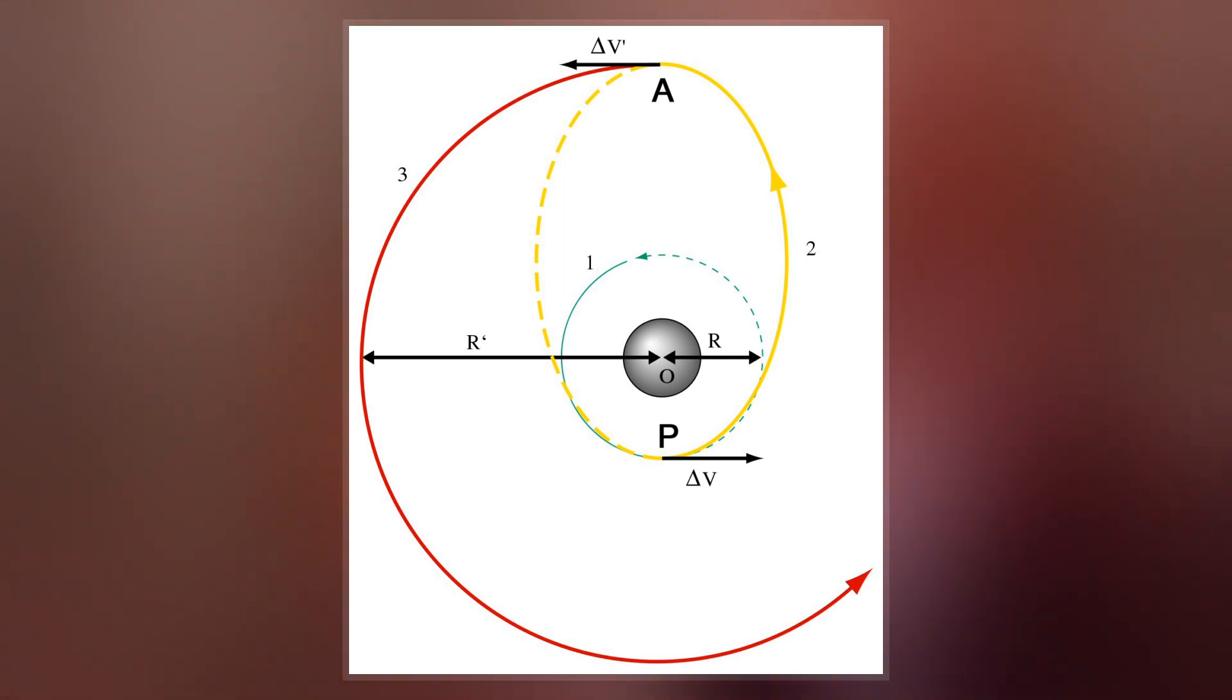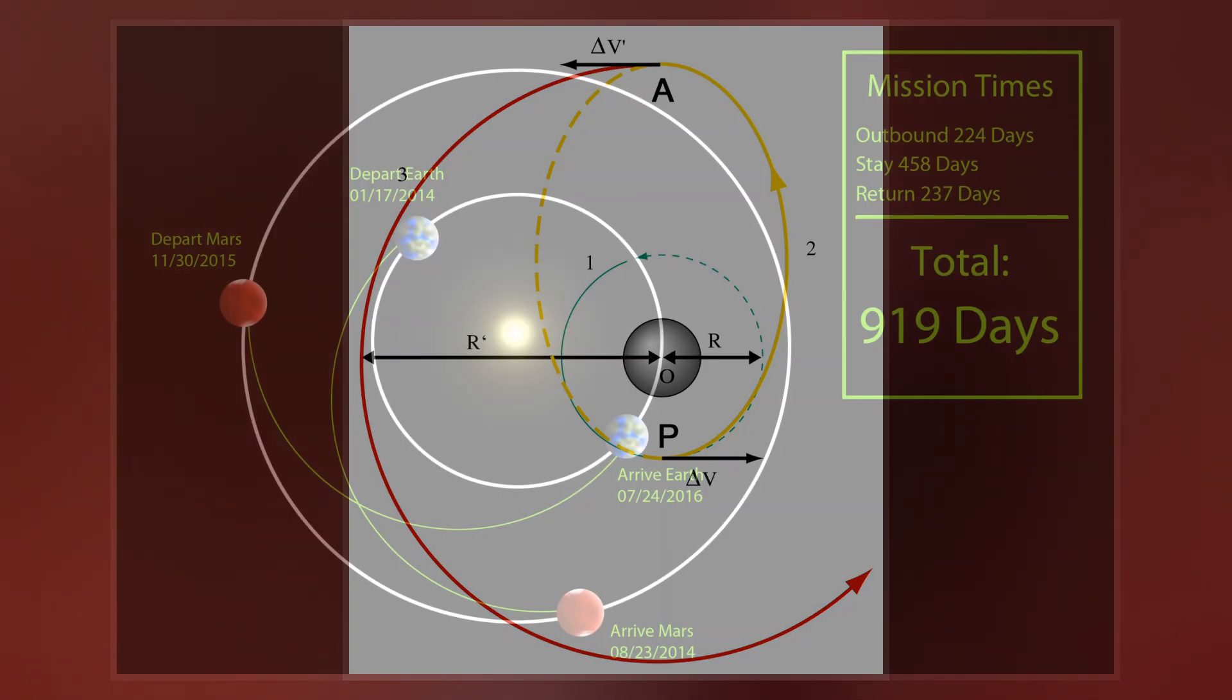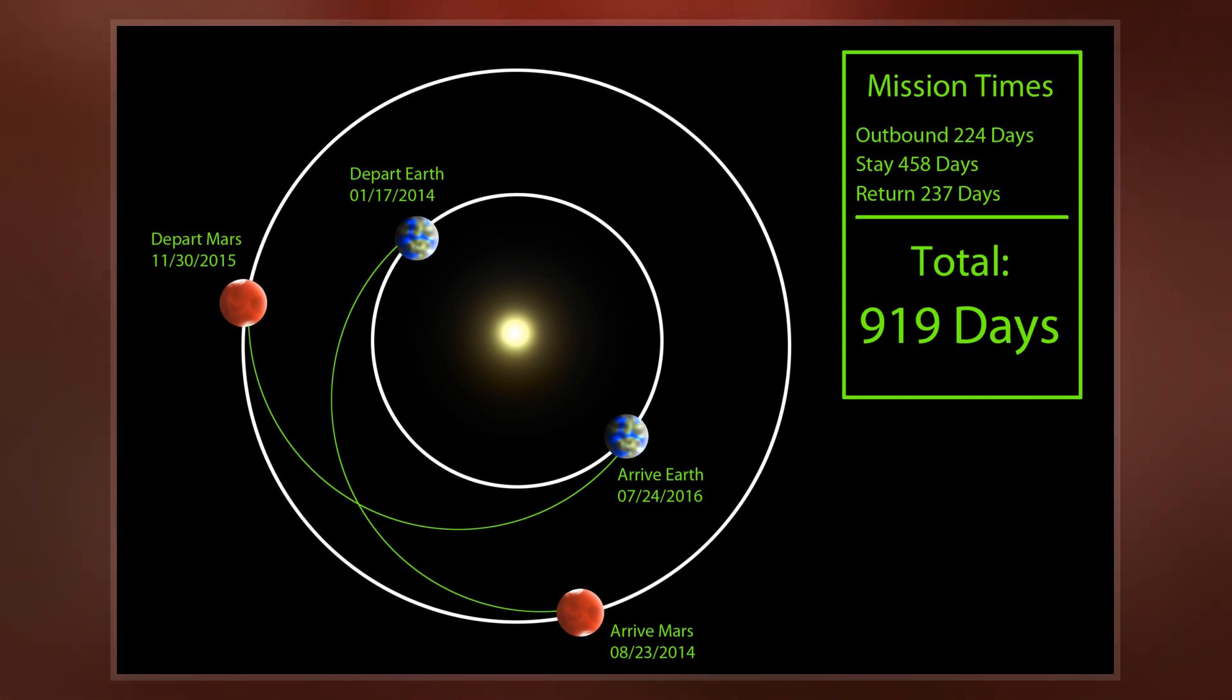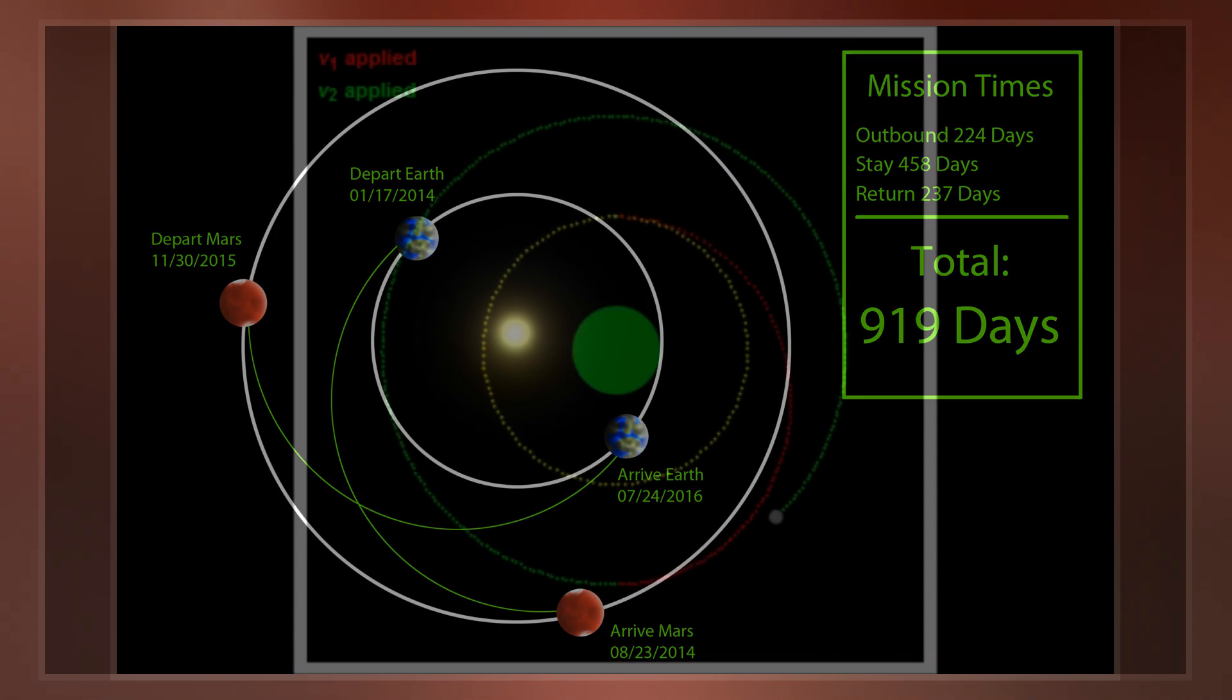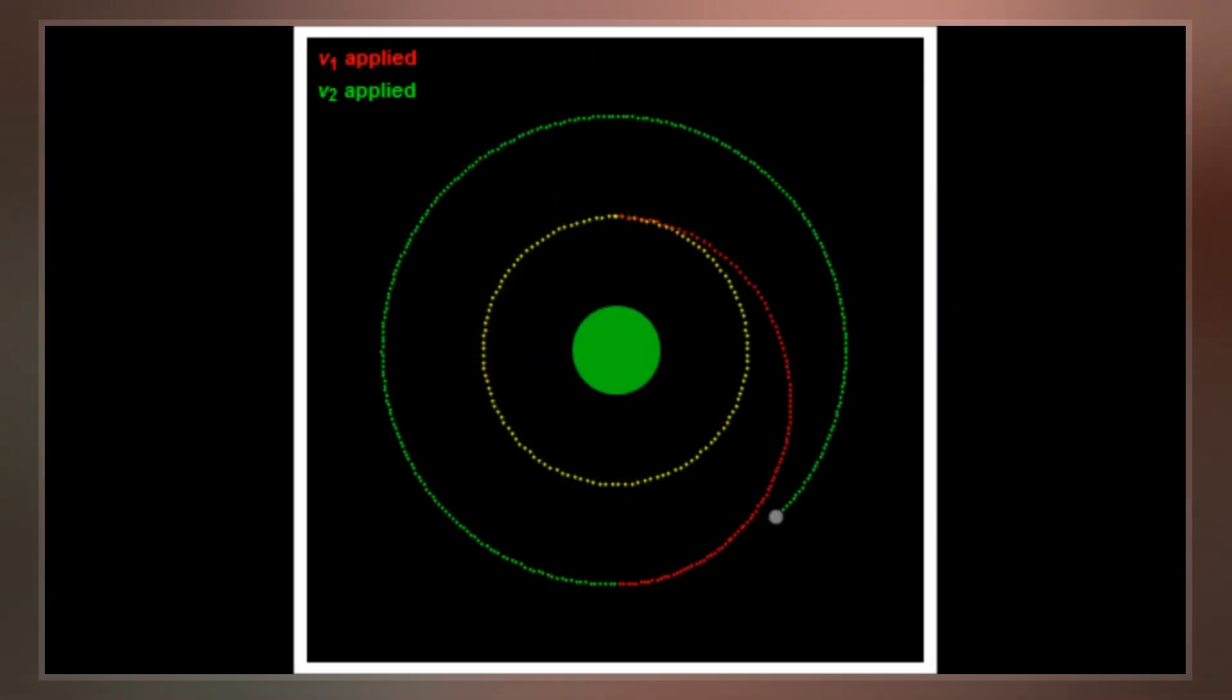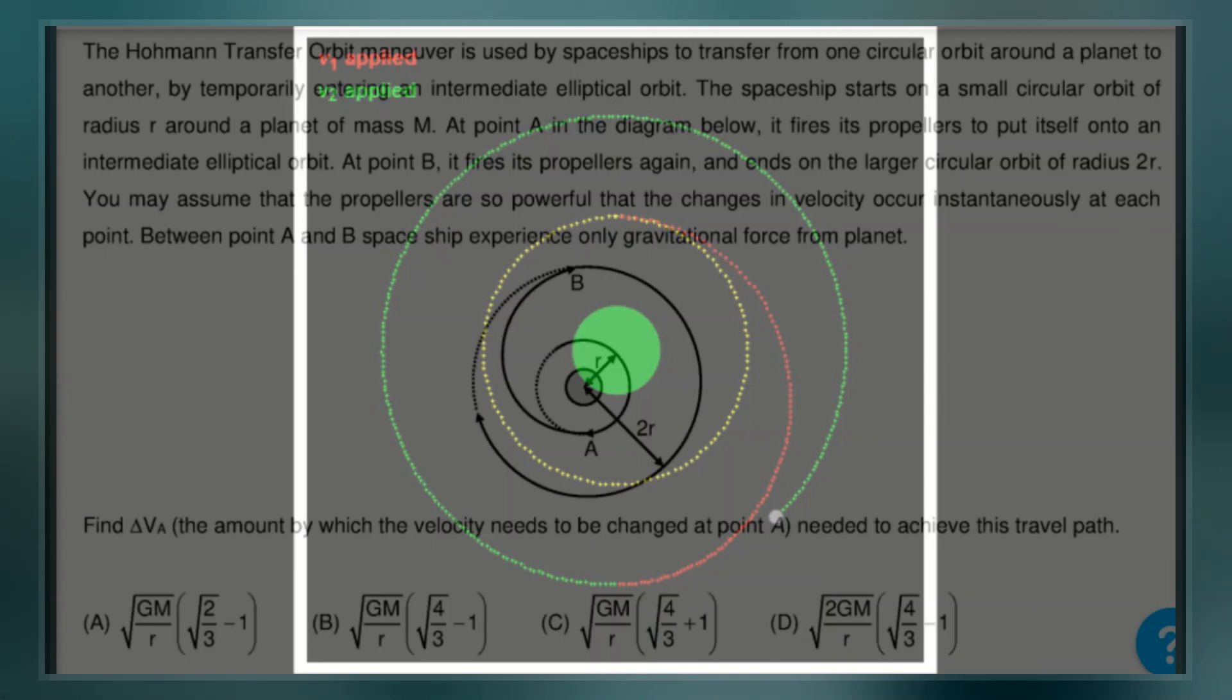The elliptic transfer orbits between different celestial bodies are often referred to as Hohmann transfer orbits. When used for traveling between celestial bodies, a Hohmann transfer orbit requires that the starting and destination points be at particular locations in their orbits relative to each other.